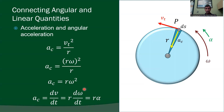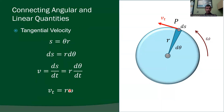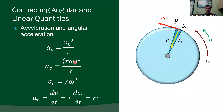What about acceleration? For a point traveling in a circular path, the centripetal acceleration equals the tangential velocity squared divided by the radius. Since vt equals r-omega, I can substitute: centripetal acceleration equals r-squared times omega-squared over r, which simplifies to r times omega-squared. So that's the expression for centripetal acceleration as a function of omega-squared.